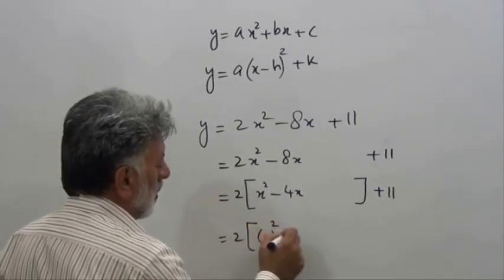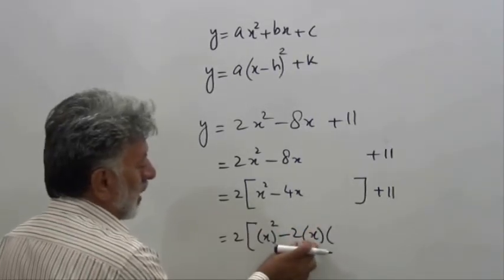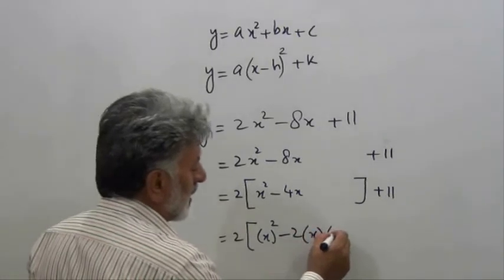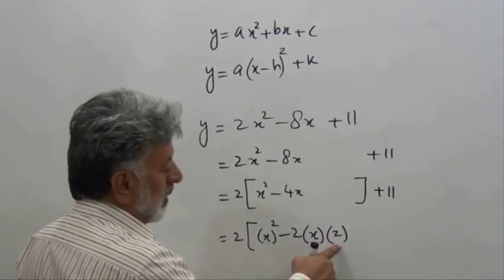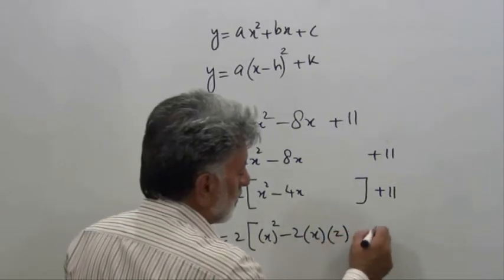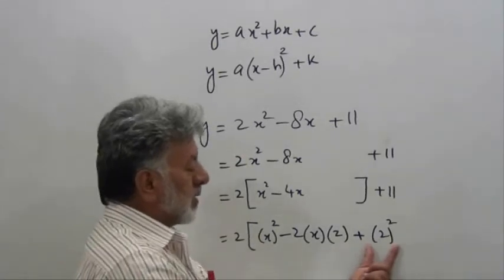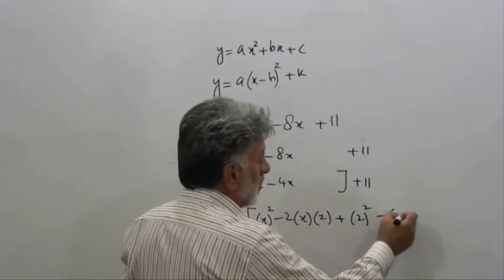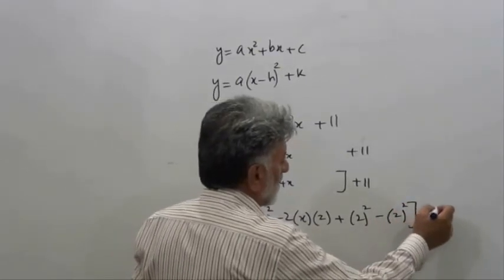We need to add the square of the second term to complete the square. Since we have added this term on our own, we shall subtract the same term so that the given expression remains the same.